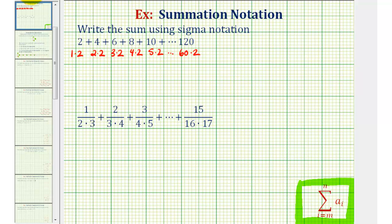Now let's look for a pattern. Notice each of these products contains a factor of two which would be a constant in our formula a sub i. And then looking at the other factors, notice how we have one, two, three, four, five, all the way out to 60.